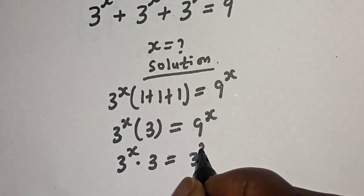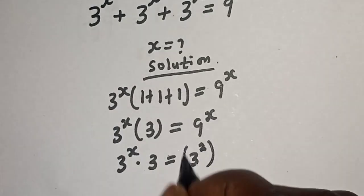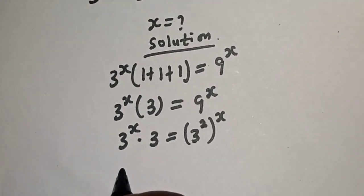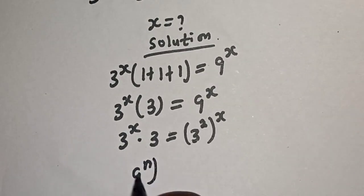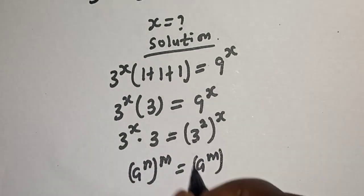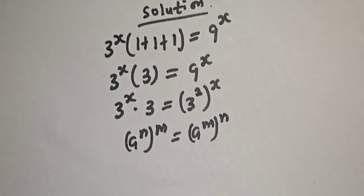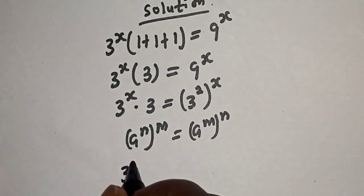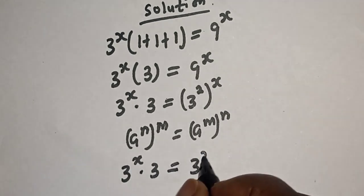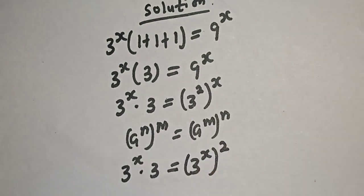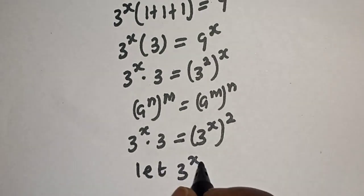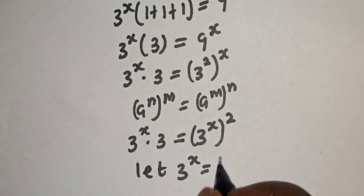9 raised to power s can be written as 3 squared, raised to power s. Take note of this rule: a raised to power n, raised to power m, is equal to a raised to power m raised to power n. So 3 raised to power s multiplied by 3 is equal to 3 raised to power s squared. Let 3 raised to power s equal to t.